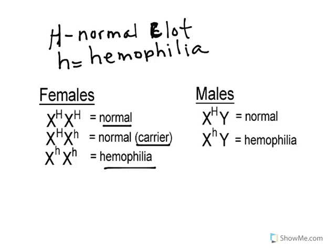For males, if they receive the normal capital H from the mother, they have no problem. But with just one lowercase H for the hemophilia gene coming from the mother, they will have the disorder. They don't have a chance to be heterozygous and be just carriers — either they have the normal gene or they have the hemophilia gene.